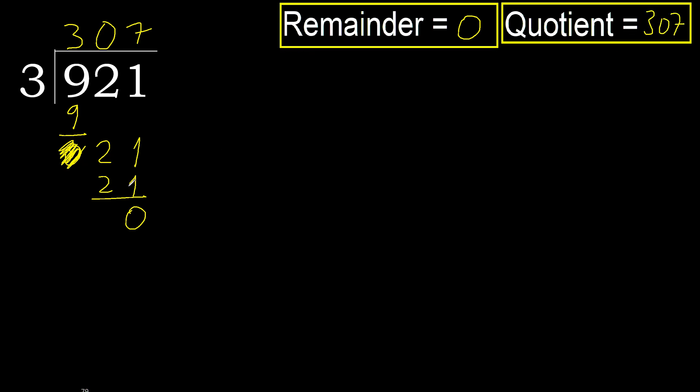Okay, with remainder 0, therefore 921 divided by 3 is 307.